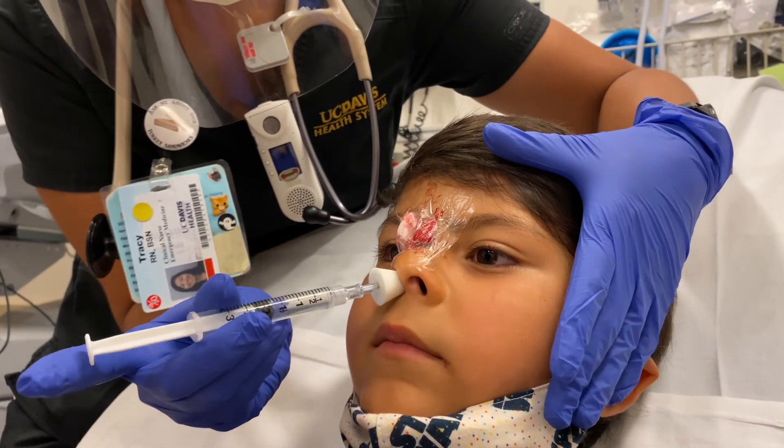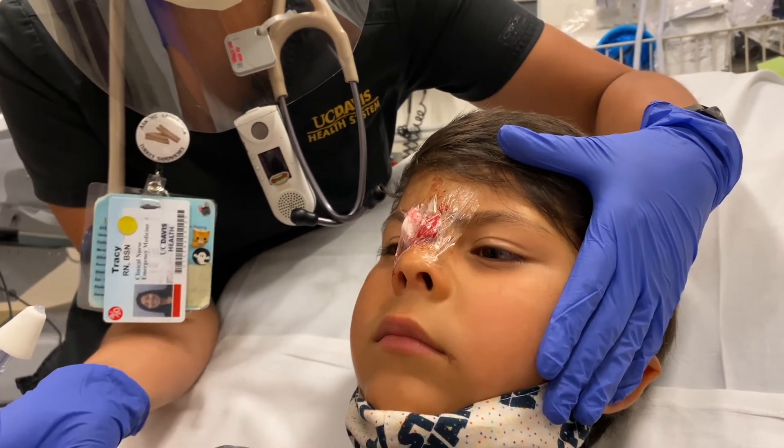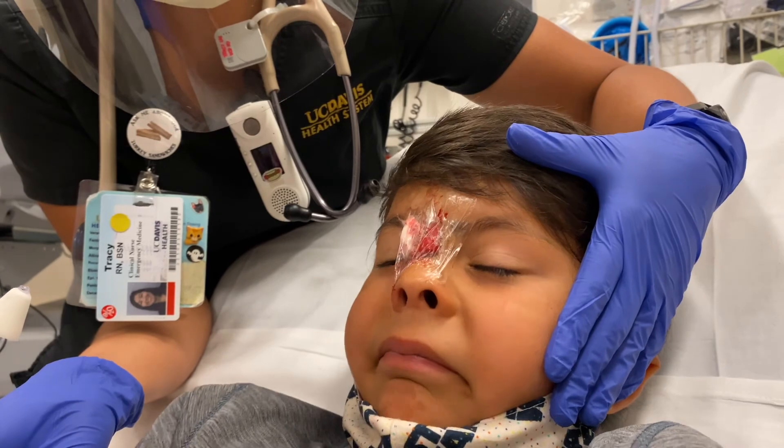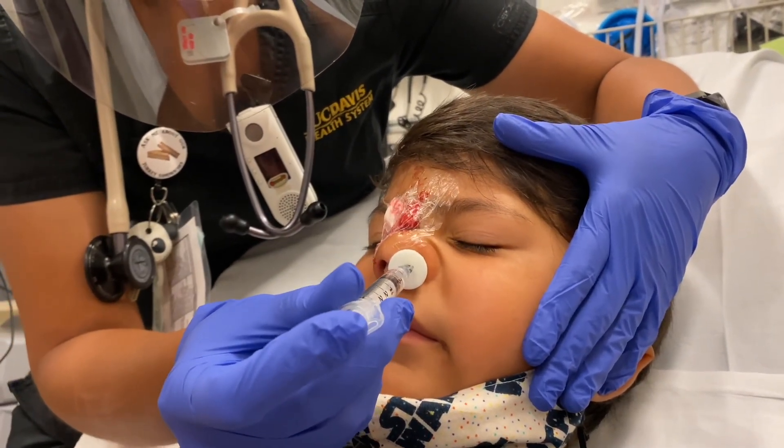Now, get a good seal, put that mucosal atomizer device all the way up in the nare and point it out to the right or to the left so it's pointing towards the tip of the ear just a little bit. And push fast on that plunger. We want to get about half in each nostril to optimize our absorption.